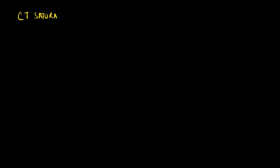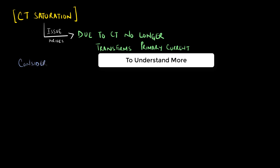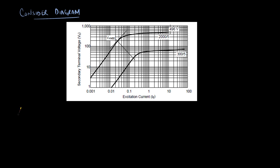The resulting issue comes from the fact that the CT can no longer accurately transform the primary current. In order to understand more about the effects of CT saturation, let us consider a typical excitation graph.